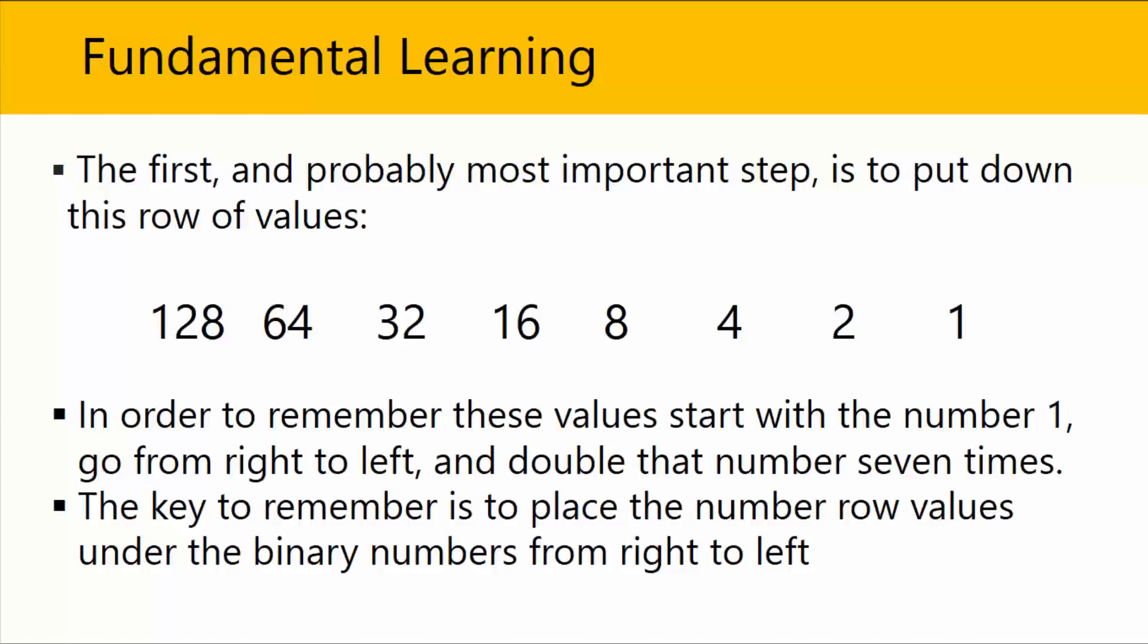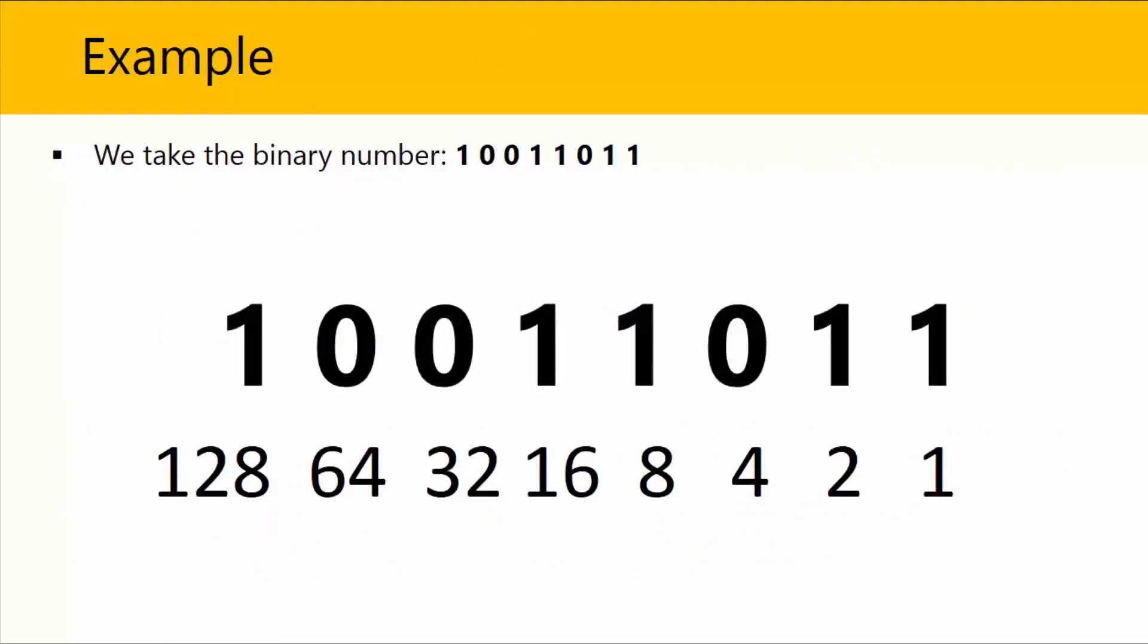And the key to remember is to place the number row values under the binary numbers from right to left. So let's take a look at an example. We will take the binary number, for example, 10011011.